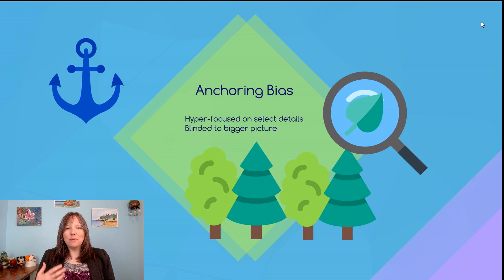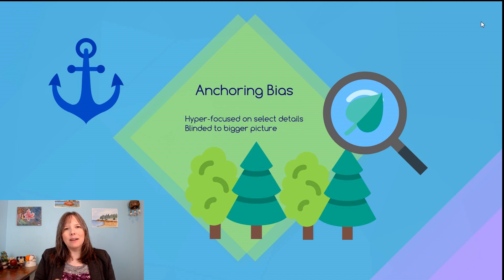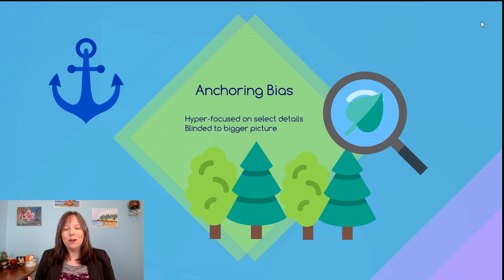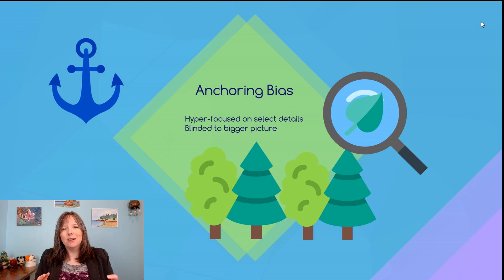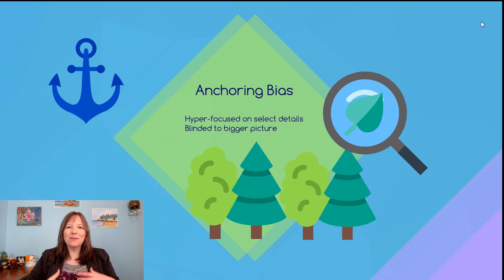An anchoring bias is the idea that when you're trying to solve a problem you're hyper focused on some details that don't matter as much as you think they do — you're blindsided to the bigger picture. If you've ever been in an escape room and you're trying to look for clues, you might have found yourself totally hung up on one panel on the side that looks suspicious but is actually just decorative and not part of the game. This is when you get stuck on a red herring or when something is just distracting you and it shouldn't be.